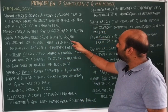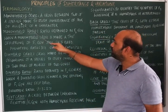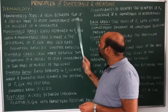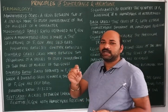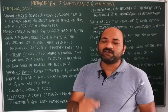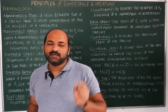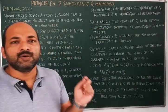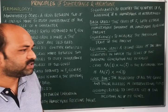So a monohybrid cross is a cross made between two of a species to study the inheritance of a pair of alleles of a character. That is what is regarded as a monohybrid cross.